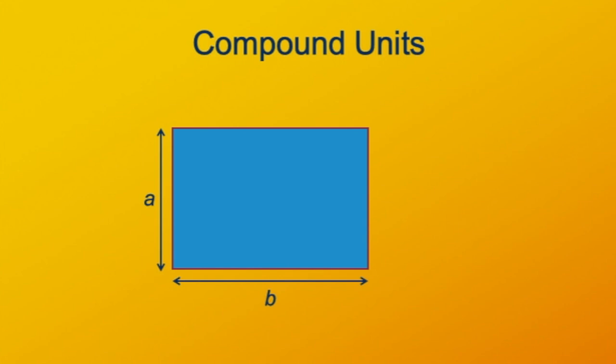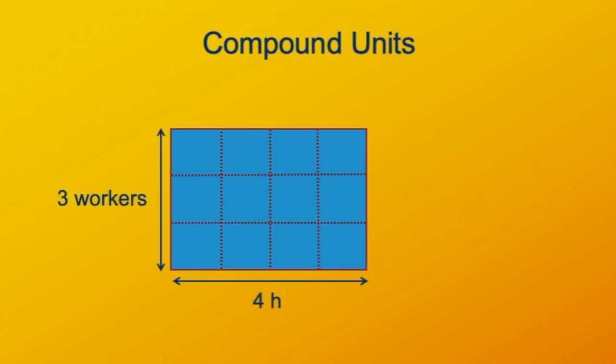For instance, the area of a rectangle is its length times its width. So, certainly, 3 meters times 4 meters gives 12 meters squared. But length and width don't need to be concrete distances. Here we imagine a task that requires the effort of 3 workers for 4 hours, working together. If these workers are interchangeable and independent, granted these are big ifs, but bear with me, then we can quantify the total effort for the job in terms of the area of this rectangle. That's 3 workers times 4 hours, which is 12 workers times hours, or 12 worker hours.